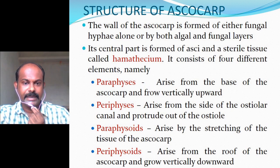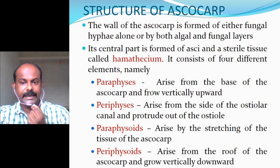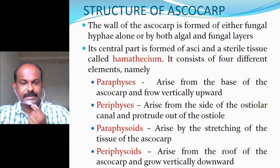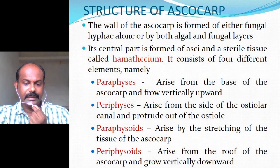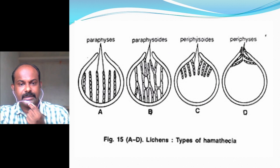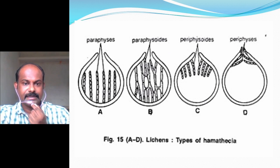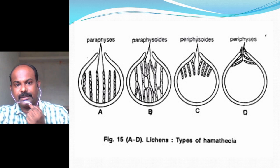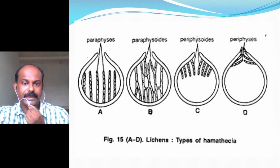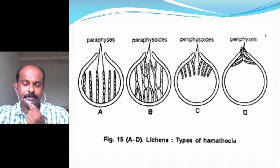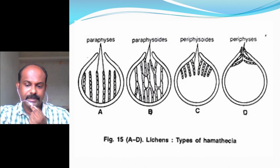Paraphyses arise from the base of the ascocarp and grow vertically upward. Periphyses arise from the side of the ostiolar canal and protrude out of the ostiole. Paraphysoids arise by stretching of the tissue of the ascocarp. Periphysoids arise from the roof of the ascocarp and grow vertically downward. This figure shows the different elements of hamathecium — paraphyses growing from the base, paraphysoids formed by extension of the inner tissue, periphyses near the ostiole, and periphysoids growing downward from above.